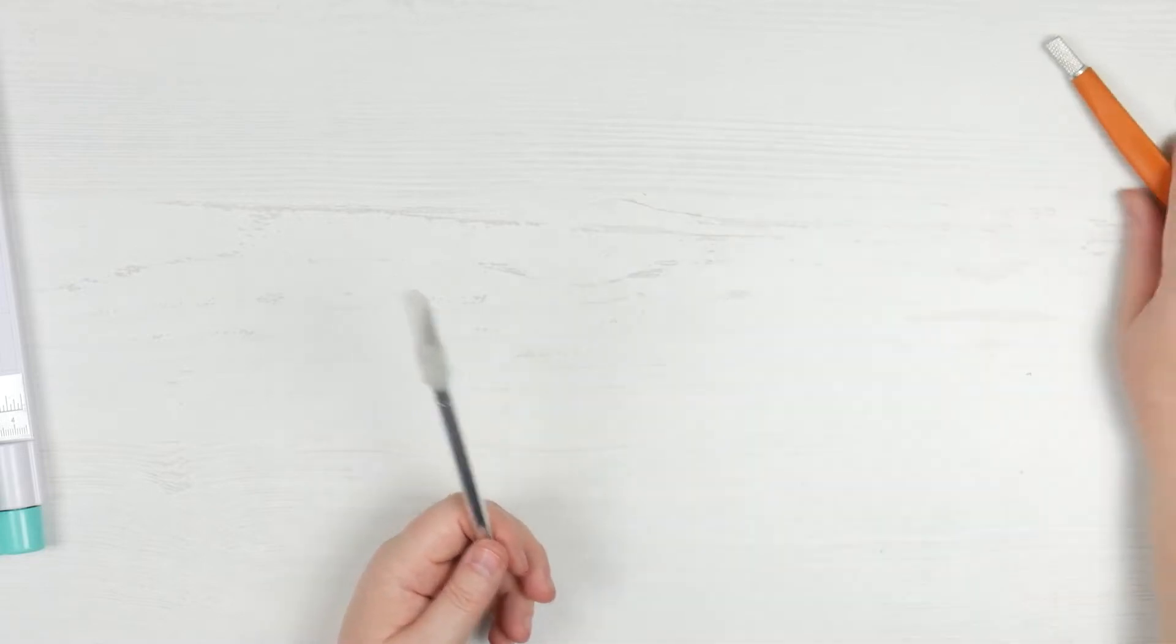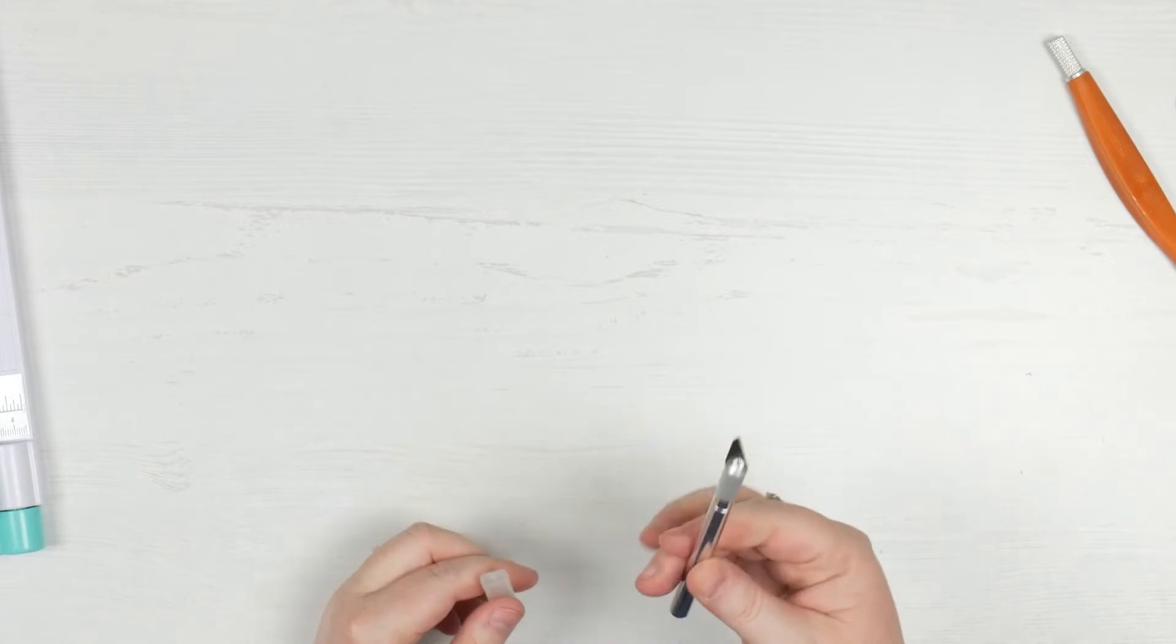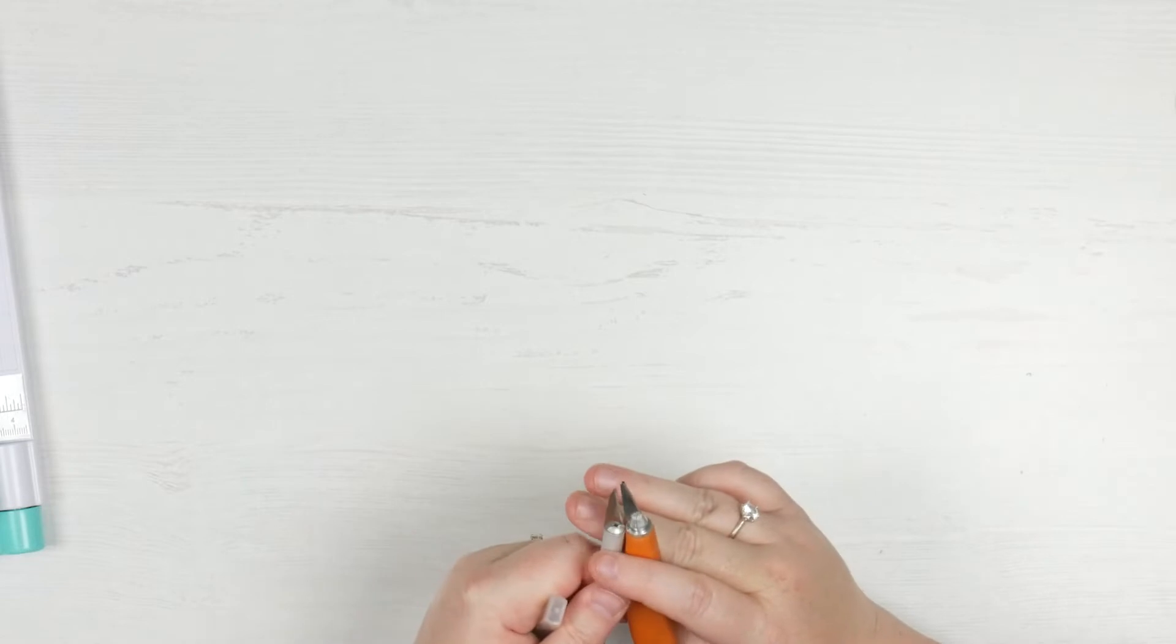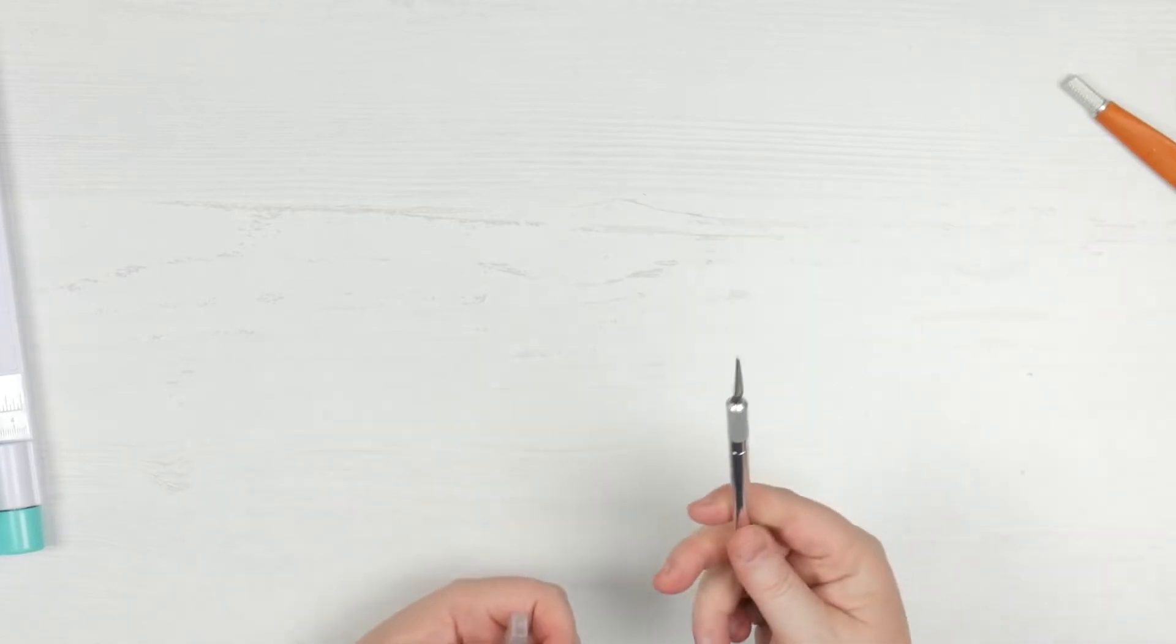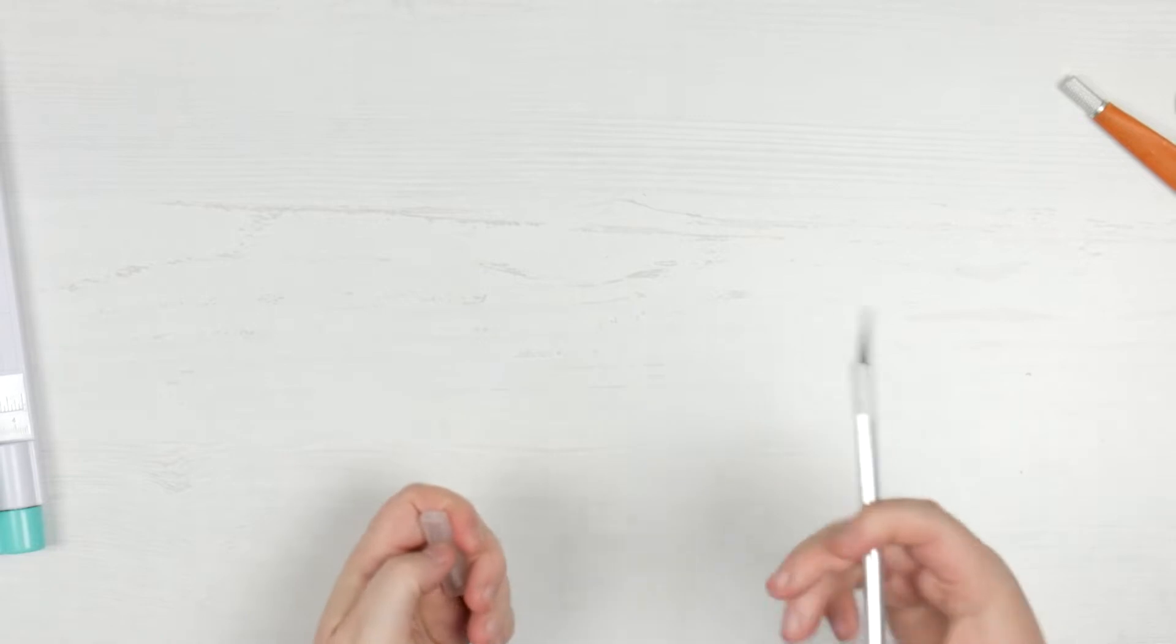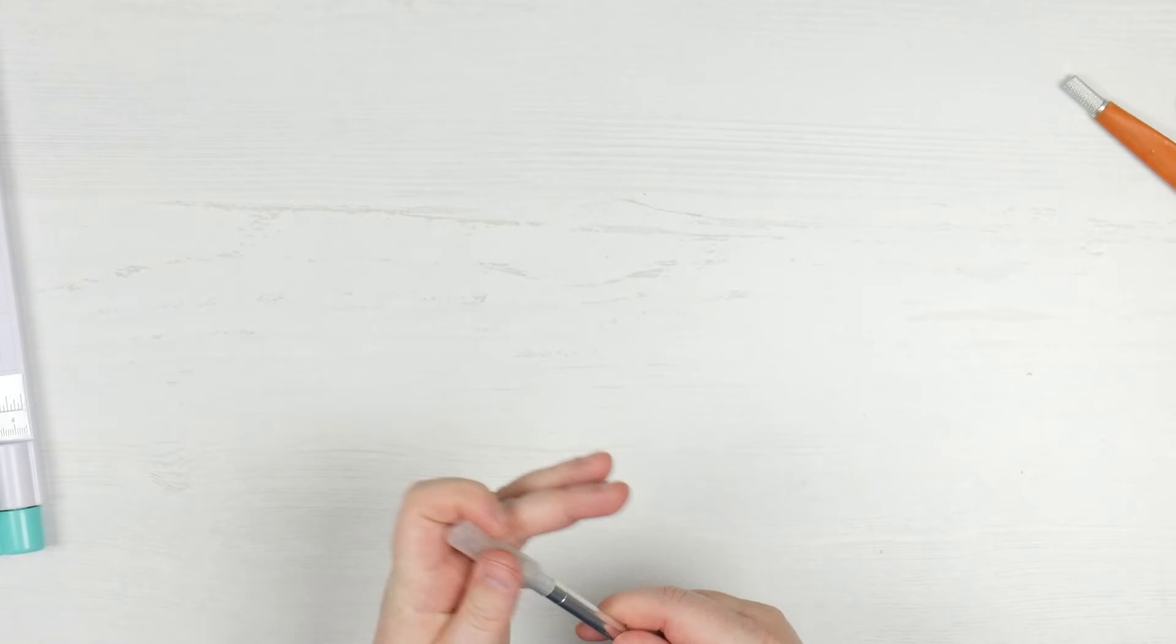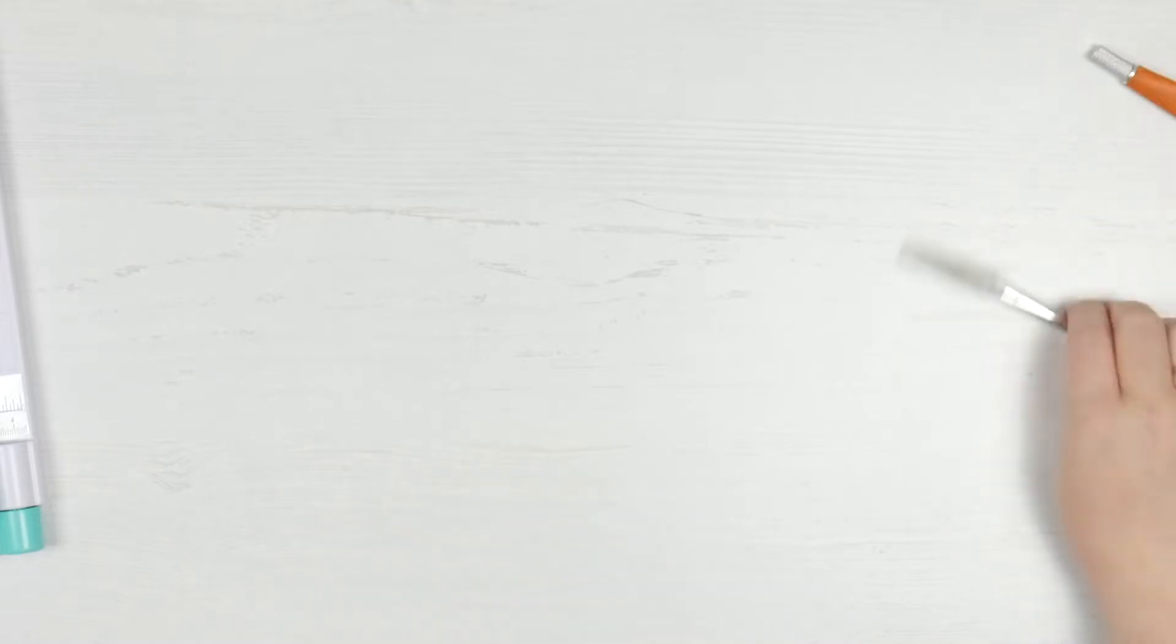This one is a Fiskars soft grip. Really easy to hold in my hand, doesn't hurt if I'm using it for a really long time. I also have this one from Kmart. The blades are generally very similar so you don't have to worry about getting fancy blades. My biggest advice with craft knife is go slow. It's so much easier to cut slowly than to have to re-cut a bunch.